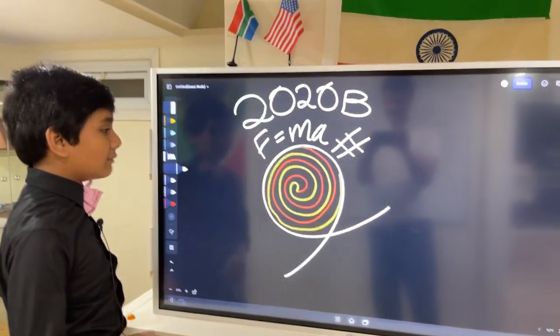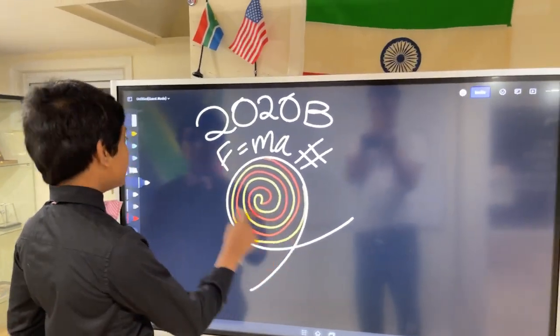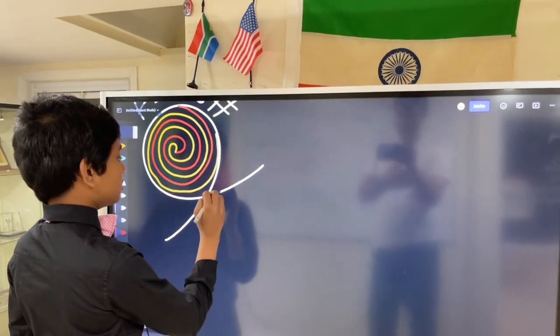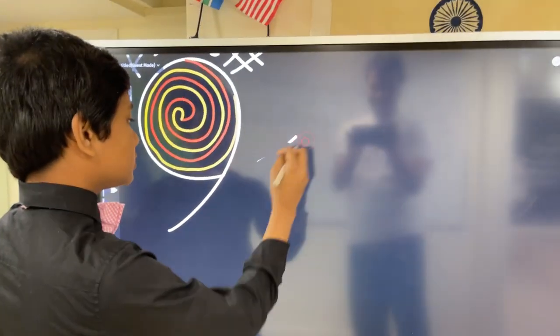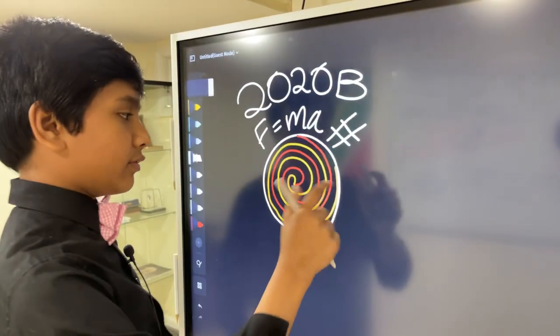We're going to be doing F equals MA problem number nine. Let me erase the little tail that came off here because right now it looks like a 45 degree alpha. So here's problem number nine.